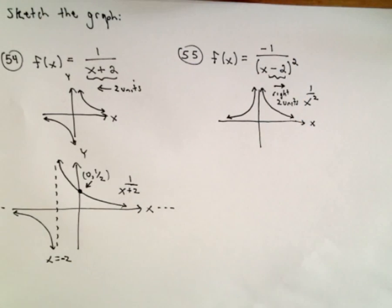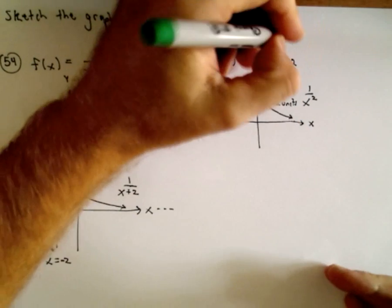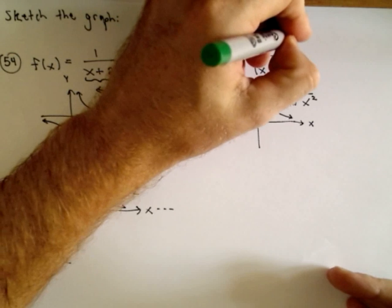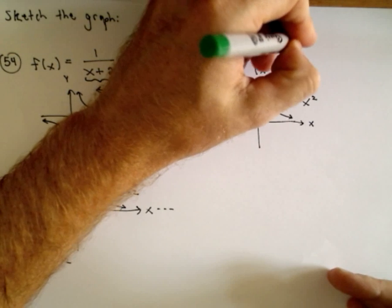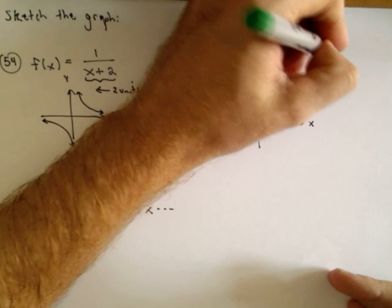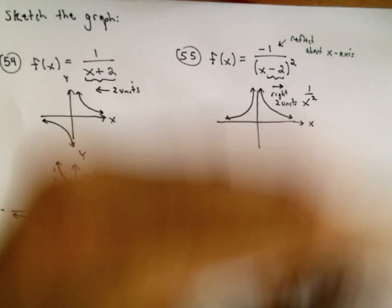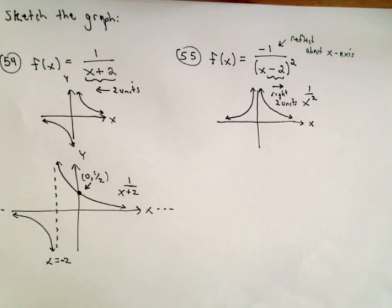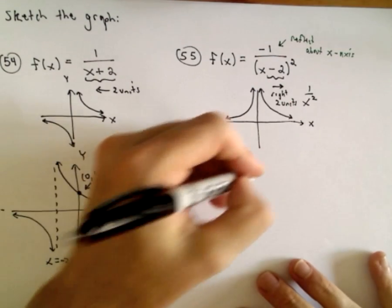But then, we have this negative in the numerator. And again, that's going to reflect the graph. It's going to flip it. So, that's going to reflect it about the x-axis. Because all of those values that were previously positive are now going to be negative.